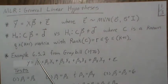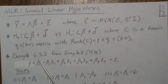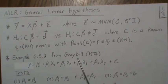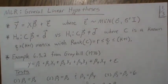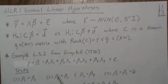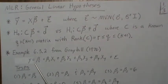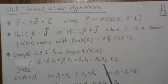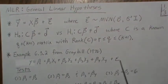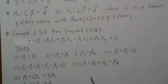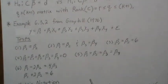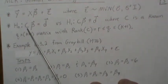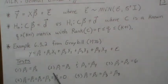The example we're going to work through is taken from Example 6.3.2 from Graybill, copyrighted in 1976. They give a model with four predictor variables — five beta parameters total — with some error. We're going to develop the C matrix that makes several tests possible.